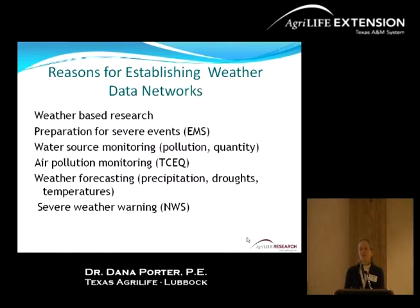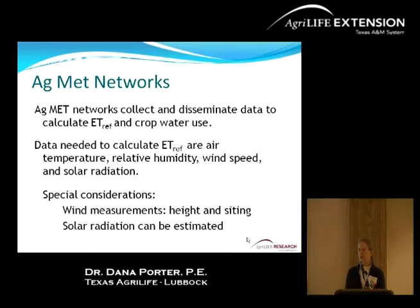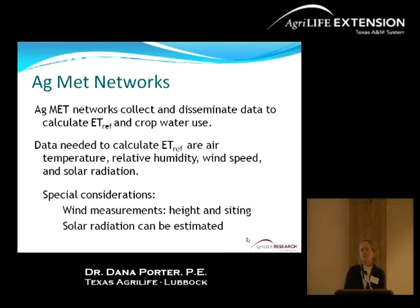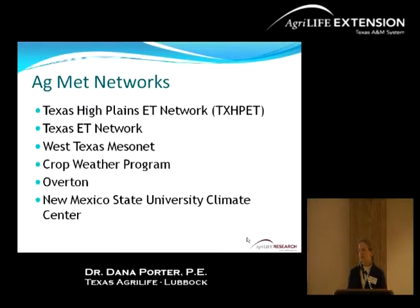Some reasons for establishing networks: most of us are familiar with agricultural meteorological stations — the ag weather parameters we need for ET. But there are many other networks out there looking at weather forecasting, drought mitigation, and specific scenarios. Understanding why those networks were built helps explain the siting conditions, why stations were placed where they were, and why particular sensor heights or sensor selections were chosen. The key data parameters are temperature, relative humidity, wind, and solar radiation. Some networks didn't report all of these, but some can be estimated — for instance, solar radiation can be estimated, and if wind speed isn't at the correct height, mathematical procedures can adjust for that, though with some inherent inaccuracy.